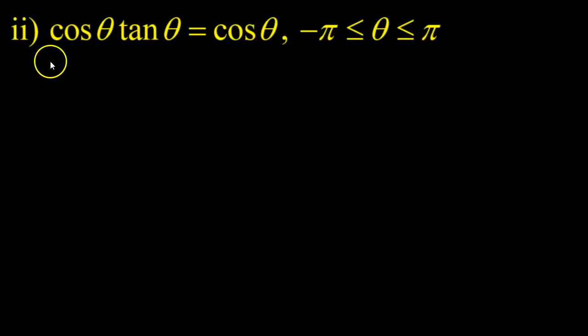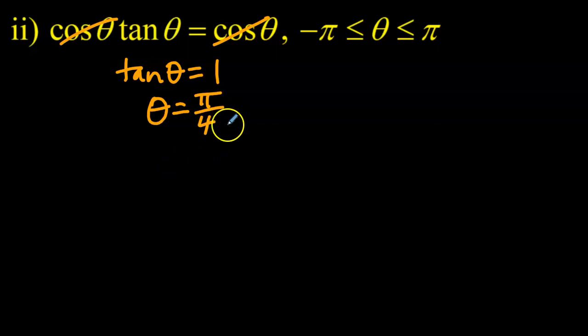What you might be tempted to do to start off with is to just divide both sides by cos θ and cancel. And so then you'd end up with tan θ is equal to one. If you're writing this down please stop because this is not the way that you should do it. It seems reasonable. You divide both sides by cos θ, you get tan θ is equal to one and you end up with θ equal to pi over four and negative three pi over four.